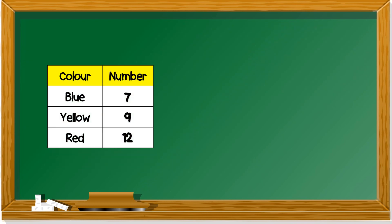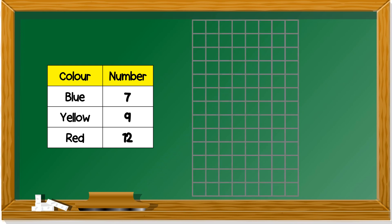From the table just now, you can do like this. Color it like blue has seven. So, you can color one, two, three, four, five, six, seven.